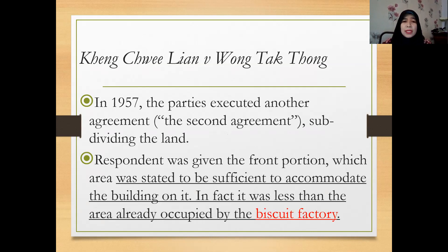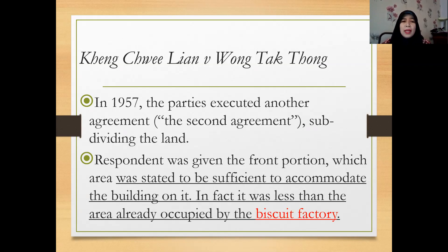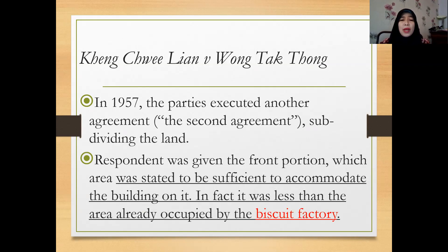After they signed the second agreement, the respondent was given the front portion — where he had constructed the biscuit factory. In the agreement it was stated that the area was to be sufficient to accommodate the building on it. But it turned out that the area was actually less than what was already occupied by the biscuit factory, so it was smaller and couldn't accommodate the whole biscuit factory.